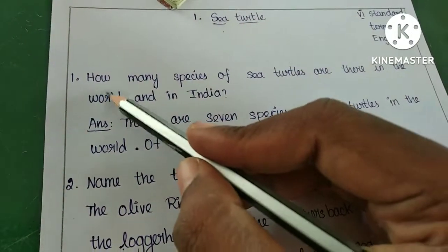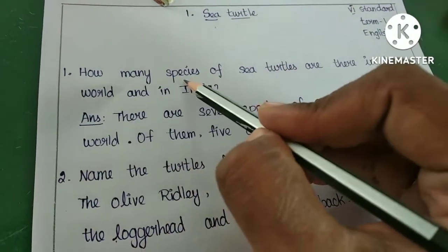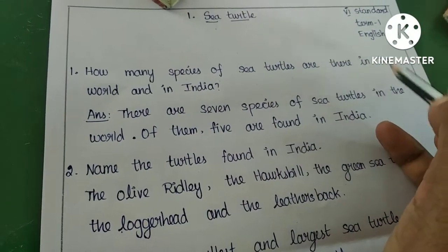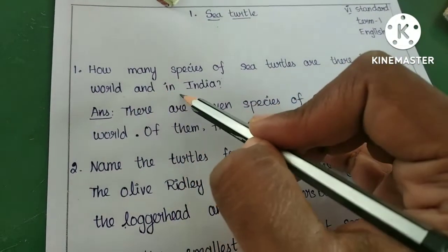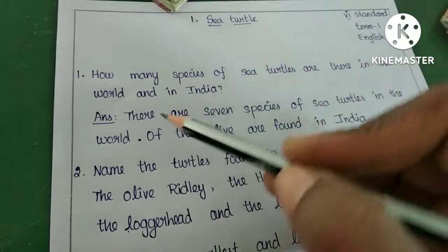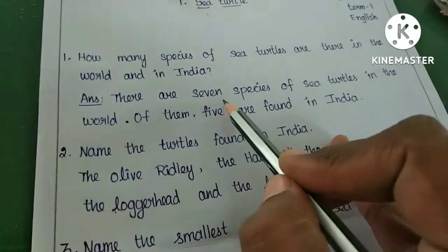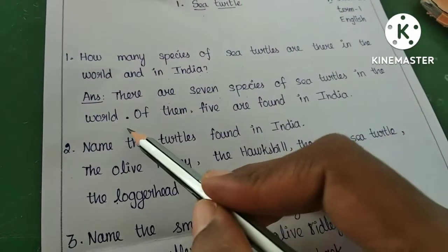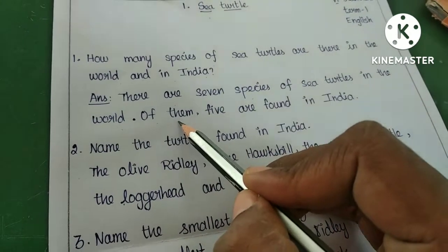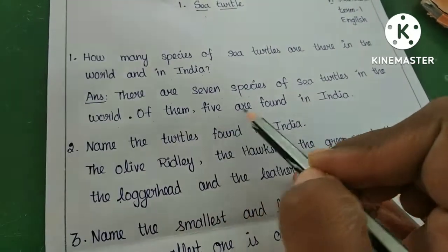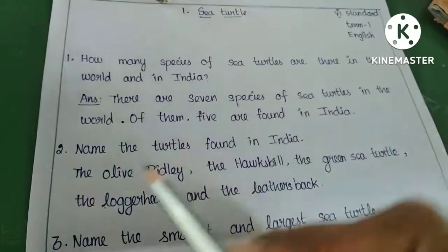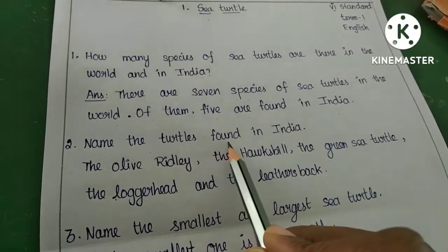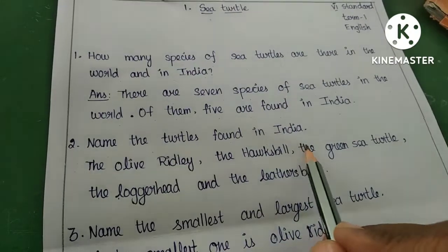Sea turtle. How many species of sea turtles are there in the world and in India? There are seven species of sea turtles in the world. Of them, five are found in India. Name the turtles found in India.